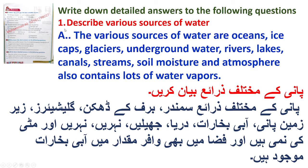Glaciers (gis me) are very large mountains of ice — us ko glacier kehte hai. Underground water (zemine ke niche) is the water we call a well (kuihe).